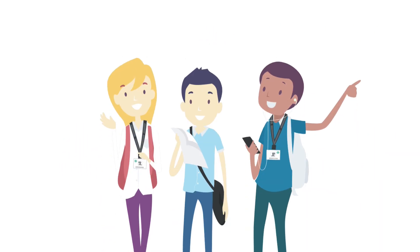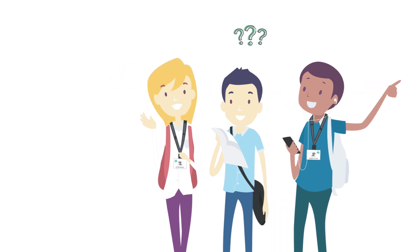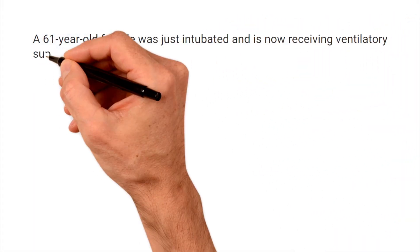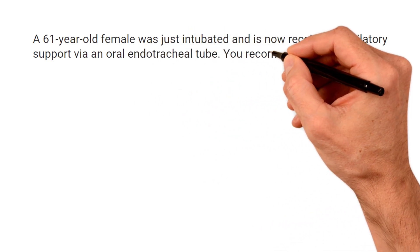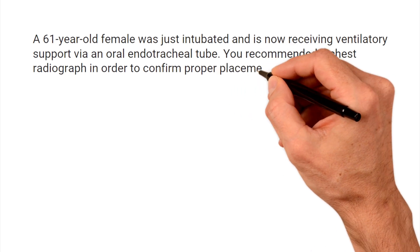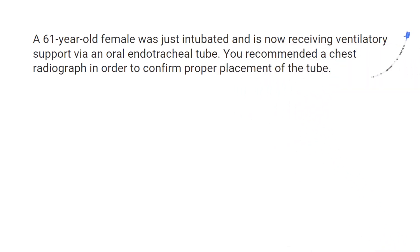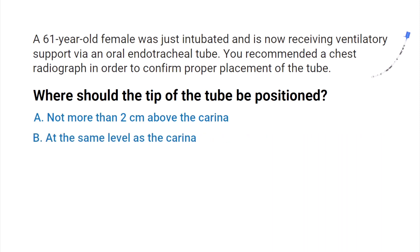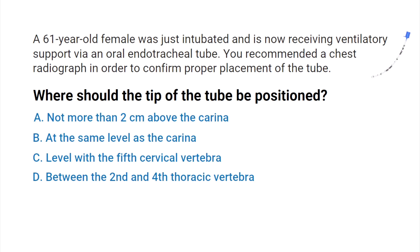This is an important topic for respiratory therapy students, which is why we created this video — to help by breaking down a sample TMC practice question on this topic. A 61-year-old female patient was just intubated and is now receiving ventilatory support via an oral endotracheal tube. You recommended a chest radiograph to confirm proper placement of the tube. Where should the tip of the tube be positioned? A) Not more than two centimeters above the carina, B) At the same level as the carina, C) Level with the fifth cervical vertebrae, or D) Between the second and fourth thoracic vertebrae.